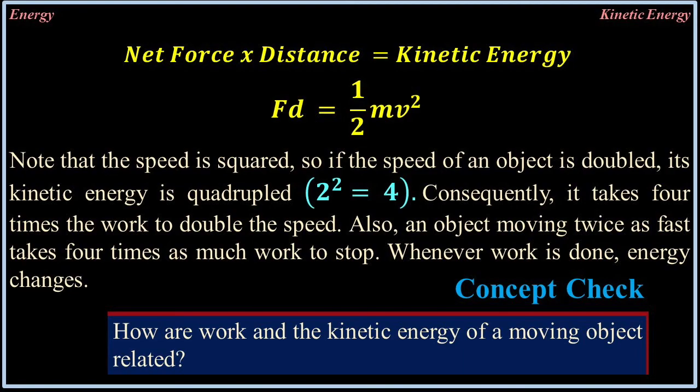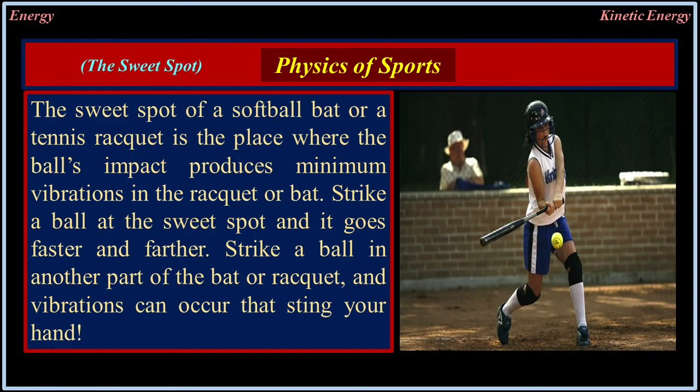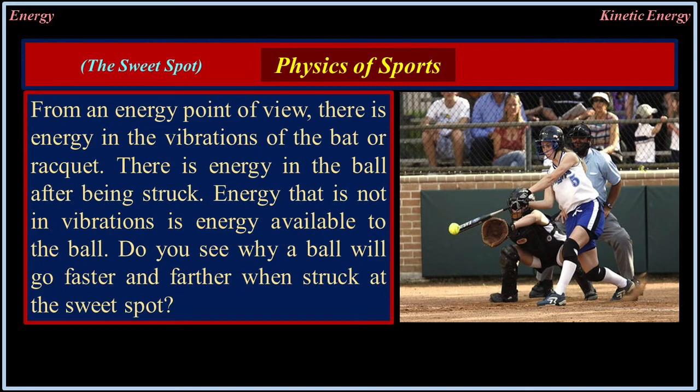Whenever work is done, energy changes. The sweet spot of a softball bat or tennis racket is the place where the ball's impact produces minimum vibrations. Strike a ball at the sweet spot and it goes faster and farther. Strike it elsewhere and vibrations can sting your hand. From an energy perspective, energy in the vibrations of the bat is energy not available to the ball. That is why a ball goes faster and farther when struck at the sweet spot.